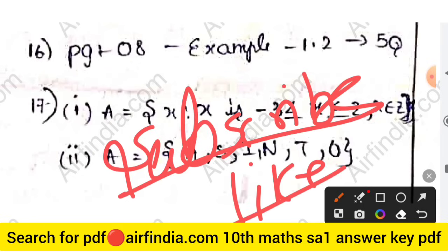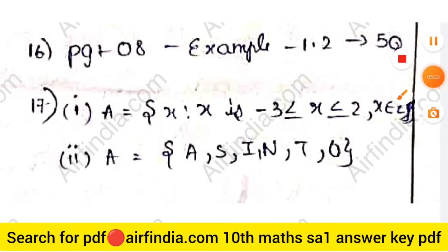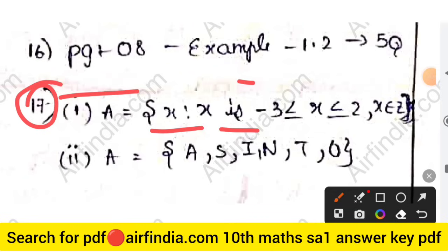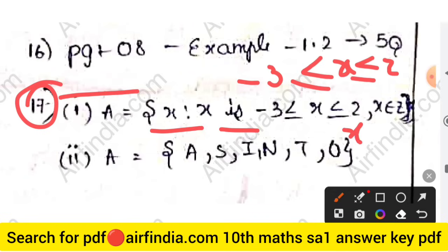Question 17: the answer is −3 ≤ x ≤ (value), where x belongs to Z (integers).